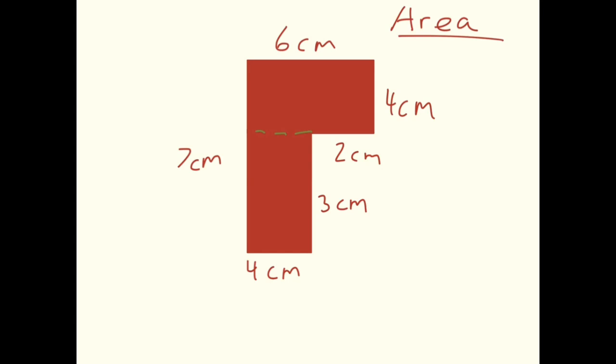I'm going to call this shape A and this shape B. Now we need to find the area of both A and B, and once we've done that, we can add the two areas together to find the whole area. Let's start with shape A.